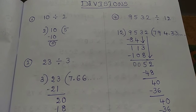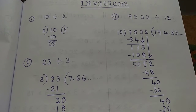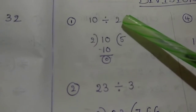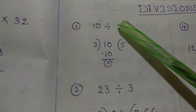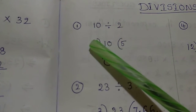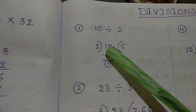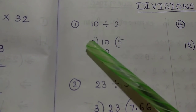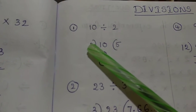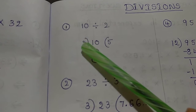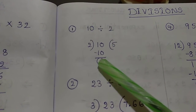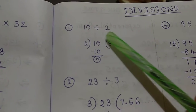Hello everyone. In this video I am going to show you division. 10 divided by 2 — what do we need to write? We write 2 into 10. We need to write 2, 5 is 10. We already have the tables. If we write 10 minus 10, we write 0. We need to write a remainder. My answer is 5.